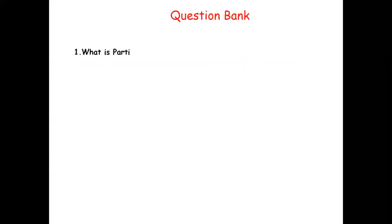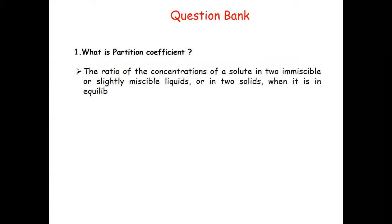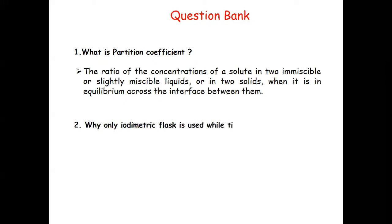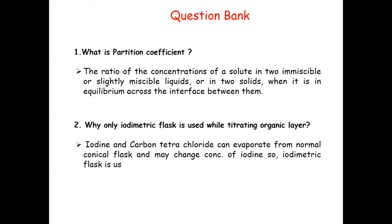Now questions for the synopsis and viva. First question: what is partition coefficient? Answer: it is the ratio of concentration of solute in immiscible or slightly immiscible liquids or in a solid when it is in equilibrium across the interface between them. Second question: why is only an iodometric flask used while titrating the organic layer? Answer: iodine and carbon tetrachloride can evaporate from a normal conical flask and may change the concentration of iodine, so an iodometric flask is used for the titration process.